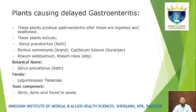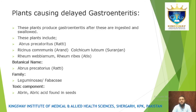This group of plants causes delayed gastroenteritis. When ingested, symptoms include diarrhea and vomiting. Plants in this category include Abrus precatorius, Ricinus, and Rheum ribes.